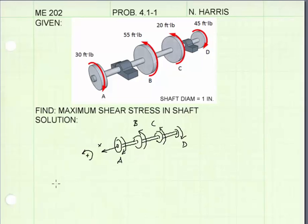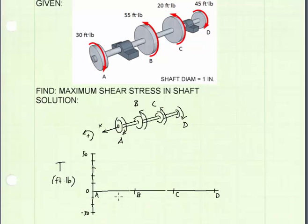I'm going to now draw the internal torque diagram. I've drawn the horizontal and vertical axes for my internal torque diagram. Beginning at point A, we have a torque being applied 30 foot-pounds in the negative direction. So from A to B, the internal torque will be negative 30 foot-pounds.